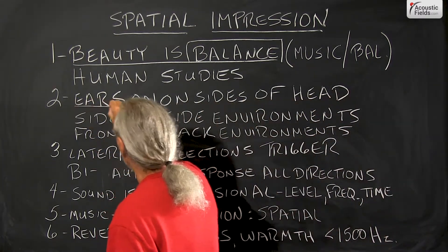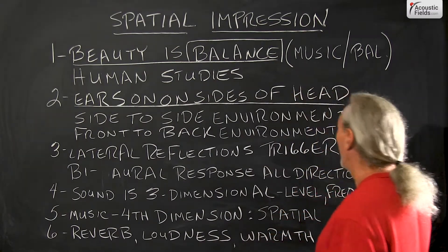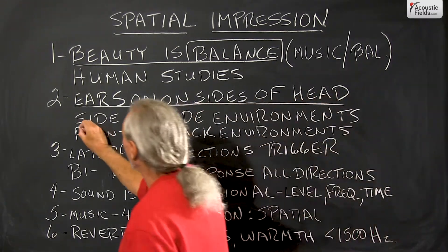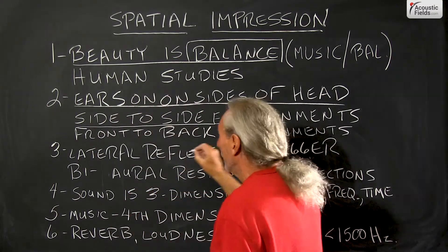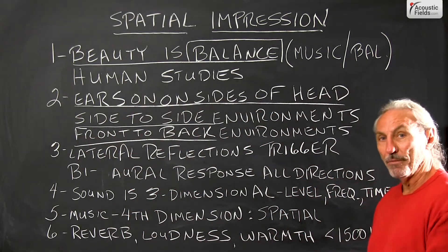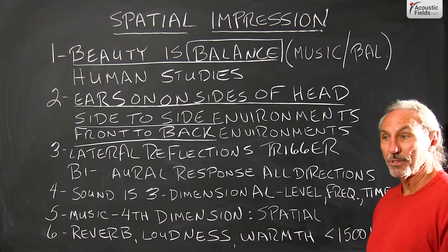How do we listen? We listen with ears on the side of our head and there's a reason for that. We get side to side and front to rear spatial impressions of our environment, of our room, of source, of distance.